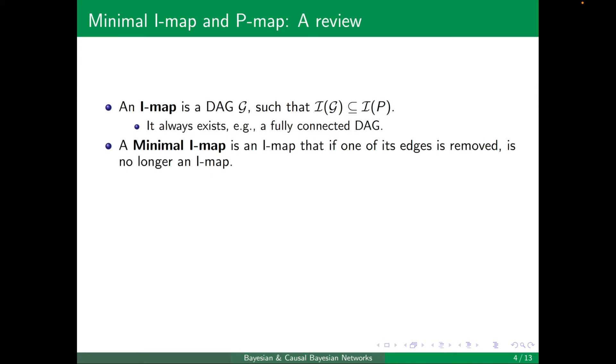So many of the I-maps can be in general redundant. A minimal I-map also always exists, just take, for example, the fully connected DAG and remove edges until we reach the point that removing one more will make it no longer an I-map.